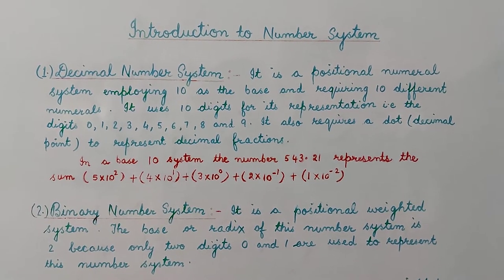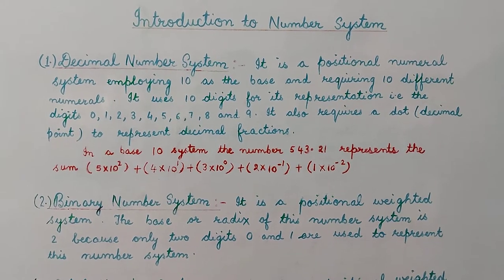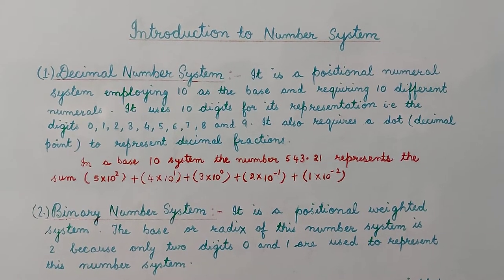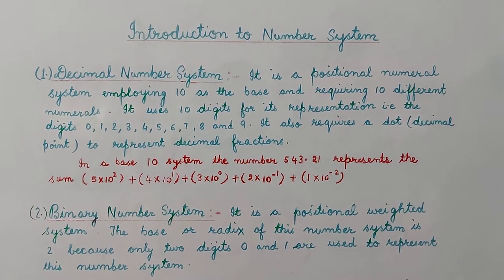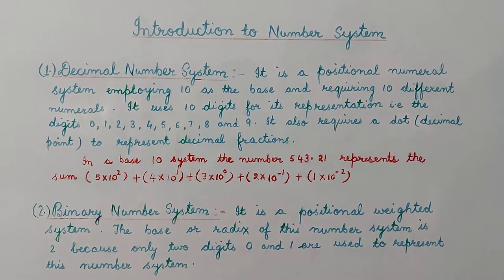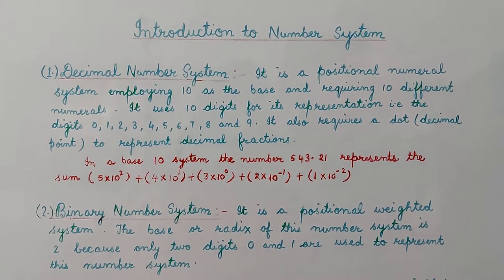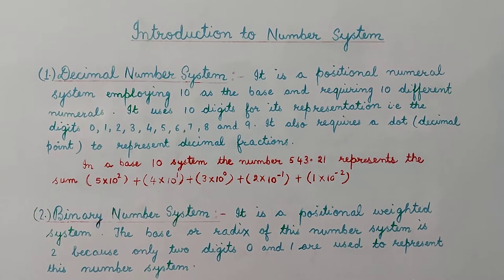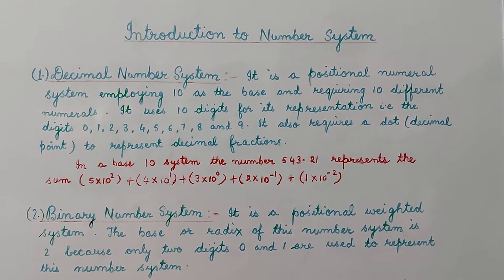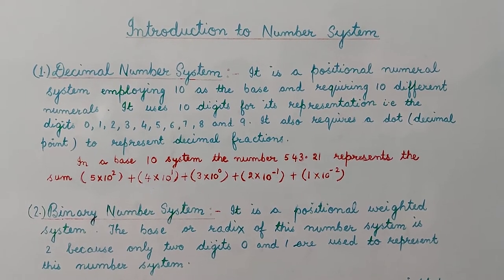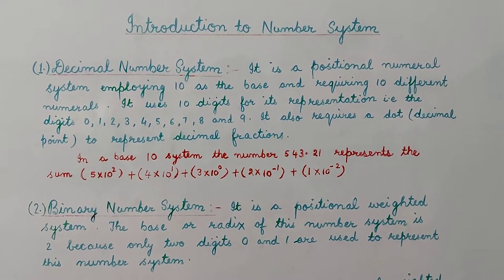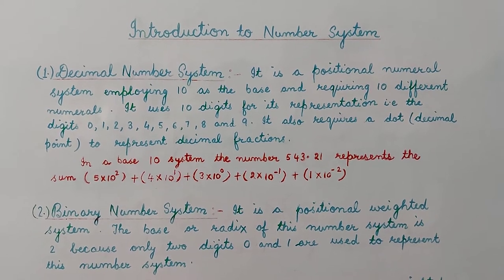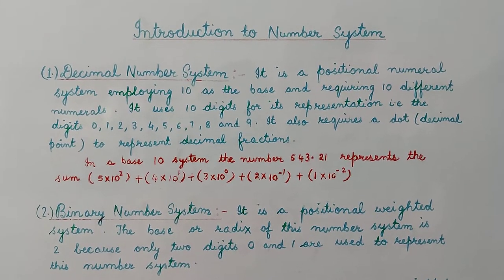The decimal number system is a positional numeral system which has a base of 10 because it requires 10 numerals for its representation. The decimal number system uses the digits 0, 1, 2, 3, 4, 5, 6, 7, 8, and 9 for its representation. The next numbers are the repetition of these numerals, so we can say that the decimal number system has a base or radix of 10.